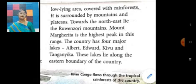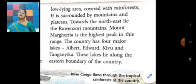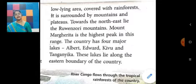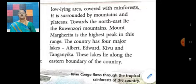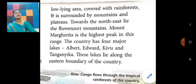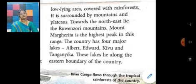The DRC area is surrounded by mountains and plateaus. Towards the North East lies the Rwenzori mountain range. Mount Margarita is the highest peak in this range. The country has four major lakes: Albert, Edward, Kivu, and Tanganyika. These lakes lie along the eastern boundary of the country. River Congo flows through the tropical rainforest of the country.